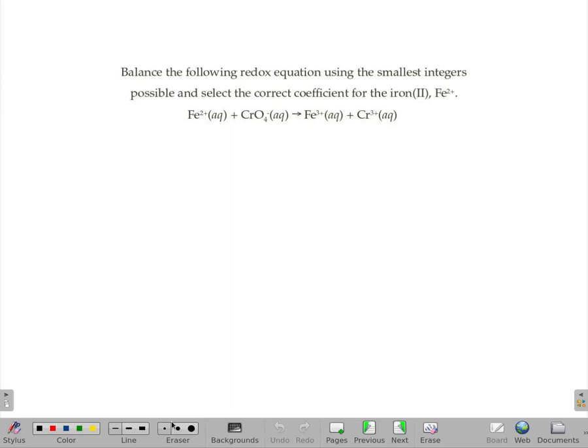Balance the following redox equation using the smallest possible integers and figure out what the coefficient is in front of the Fe2+. We're going to figure out what that is.